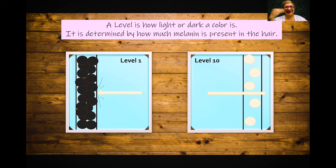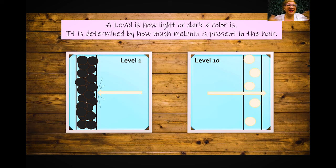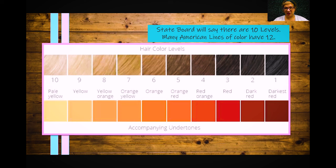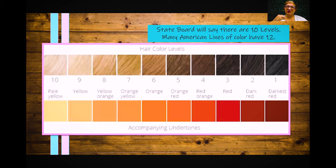State boards say there are 10 levels — level one being darkest, level ten being lightest. Many American lines have 12 levels; Redken has about 11, Matrix has 12. If there are 12 levels, there's just a little less variation between each level — they might add extra adjectives like 'medium light brown.' But 10 levels is what to go with for most state boards.